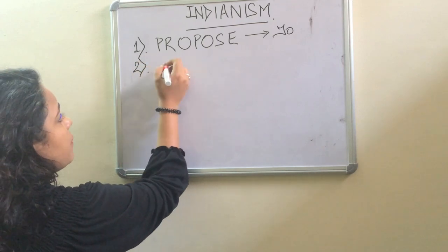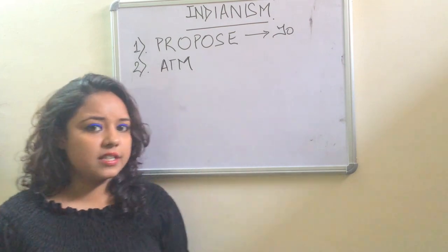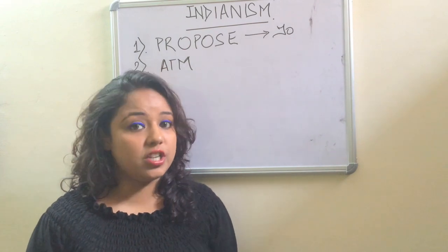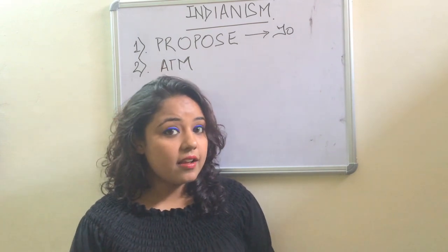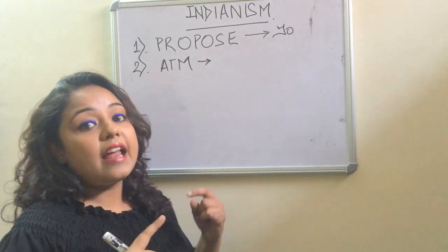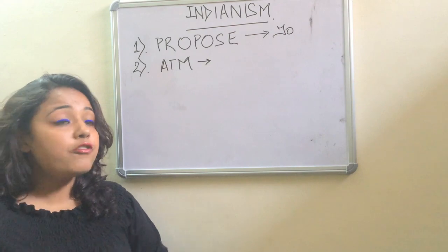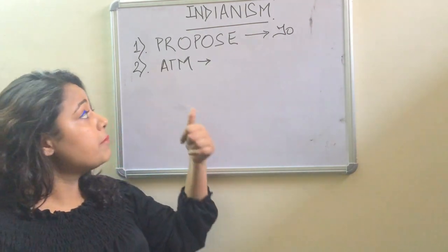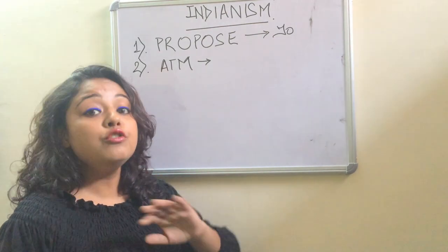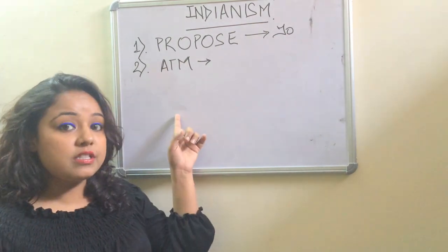The second word is ATM. Consider the statement: 'Please wait for me, I am going to withdraw money from the ATM machine.' ATM already means Automated Teller Machine, so saying 'ATM machine' is redundant. You do not need to explicitly use the word 'machine' when using ATM.